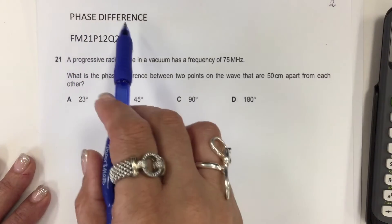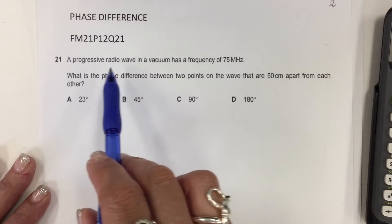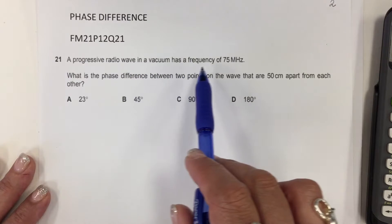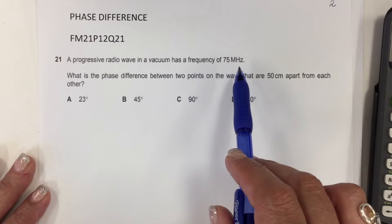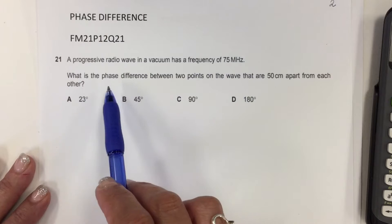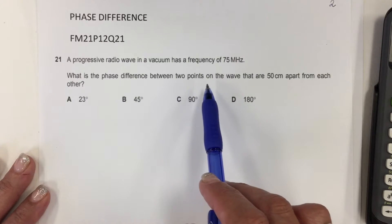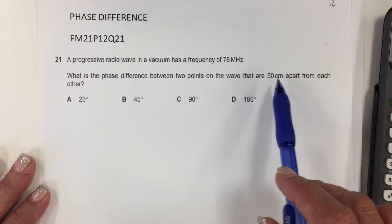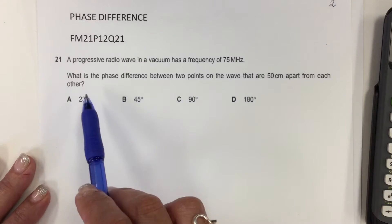This question is about phase difference. A progressive radio wave in a vacuum has a frequency of 75 megahertz. What is the phase difference between two points on the wave that are 50 centimeters apart from each other?